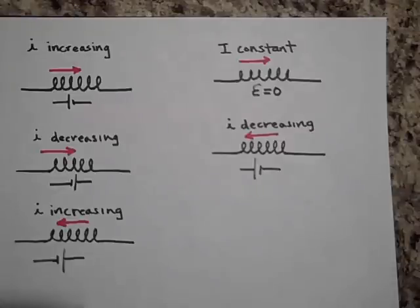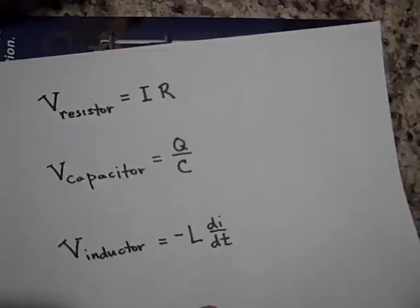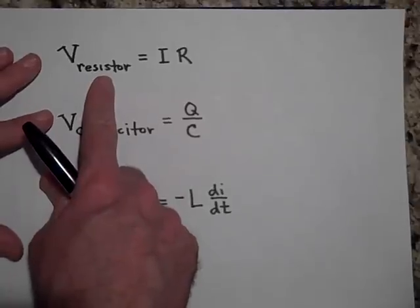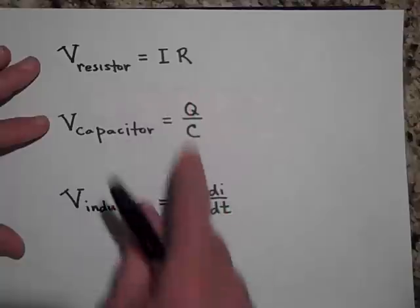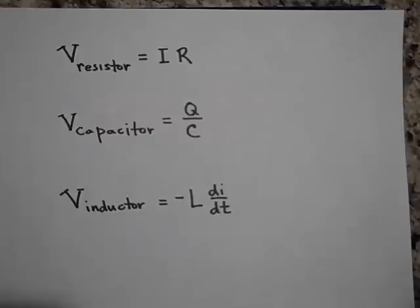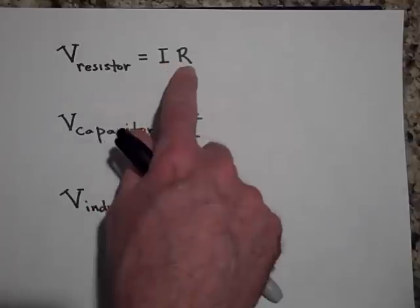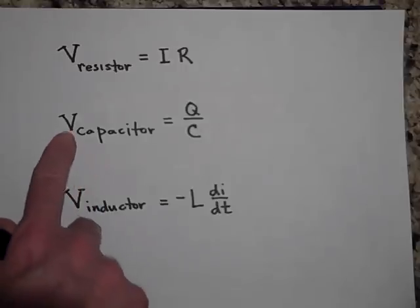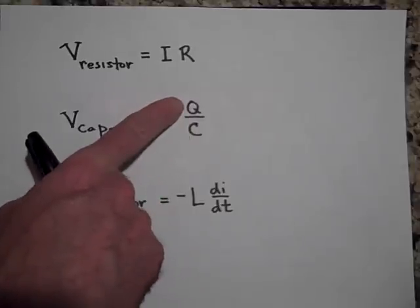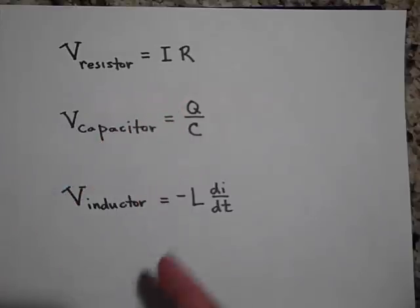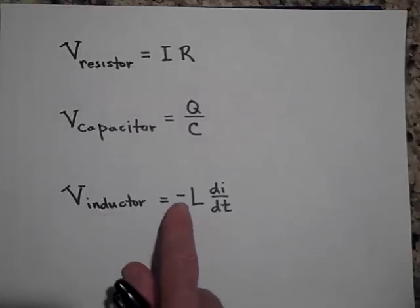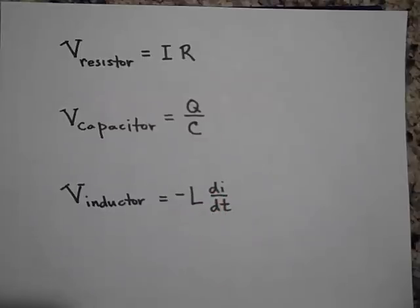We now have one more circuit element with a voltage associated with it. For a resistor, voltage is I times R — that's Ohm's law. For a capacitor, the voltage across it is Q over C, the charge on one plate divided by capacitance. For an inductor, the voltage across it is negative L times dI/dt, where L is called inductance.